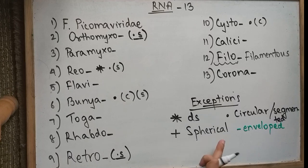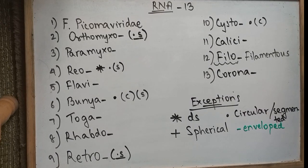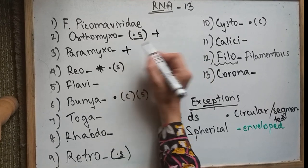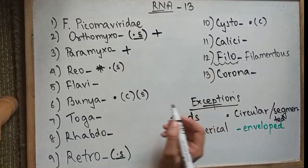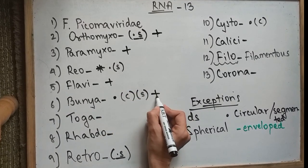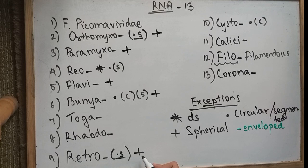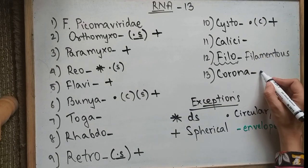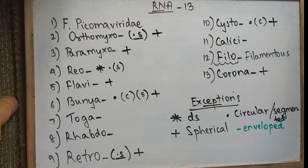Moving on to spherical or icosahedral: all of them are icosahedral except Orthomyxo, Paramyxo, Flavi, Bunya, Retro, Cysto, and Corona — they are spherical. The rest are icosahedral. Rhabdo is bullet-shaped.